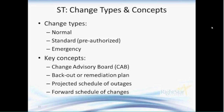Emergency changes are much like normal changes except that the timeframes are compressed. An emergency change is requested to resolve a particular incident, outage, or to prevent an outage within the organization. Usually we're talking in a matter of hours or days, so it can't wait for the weekly change advisory board meeting. Approval is provided by the ECAB — the emergency change advisory board — and membership to the ECAB varies based on the categorization or product related to the specific emergency change request.